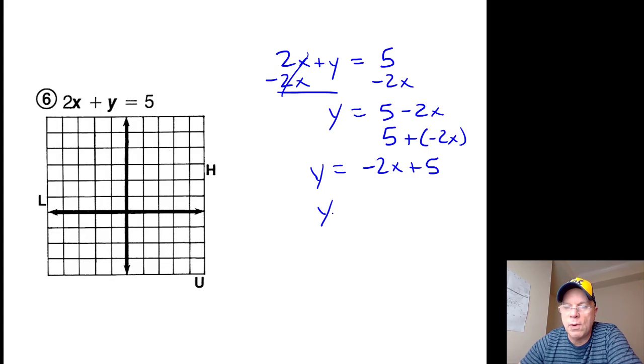When I write y equals mx plus b, I see that b is positive 5, so our line intersects the y-axis at positive 5, and m is negative 2, delta y over delta x.